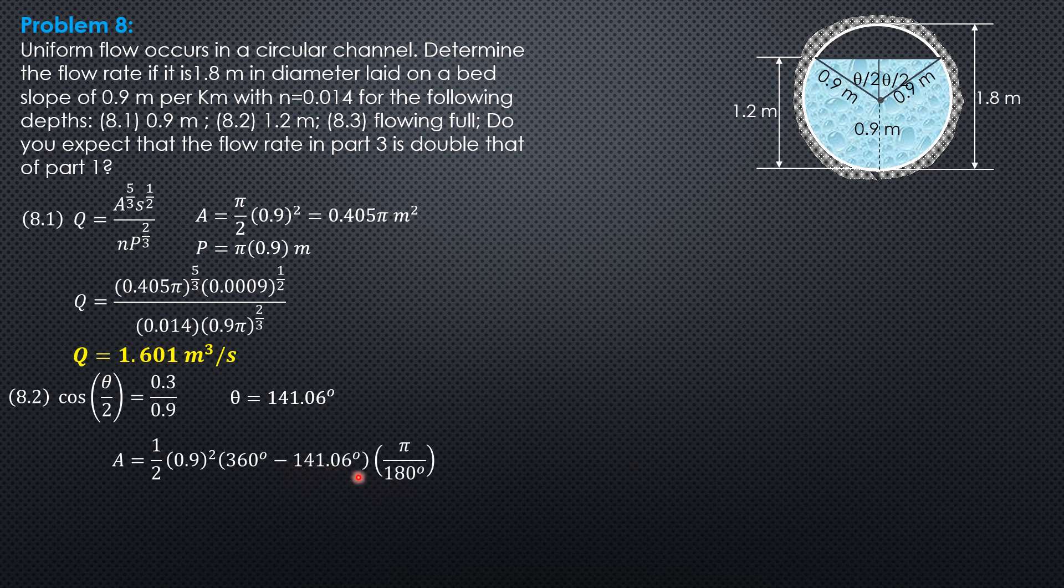So area is 1.2 of 0.9 squared times 360 degrees minus 141.06 times pi over 180, because it should be in radians, plus area of triangle, 1.2 of 0.9 squared, 1.2 product of adjacent side sine of included angle, sine of 141.06 degrees. So the area is 1.802 square meters.